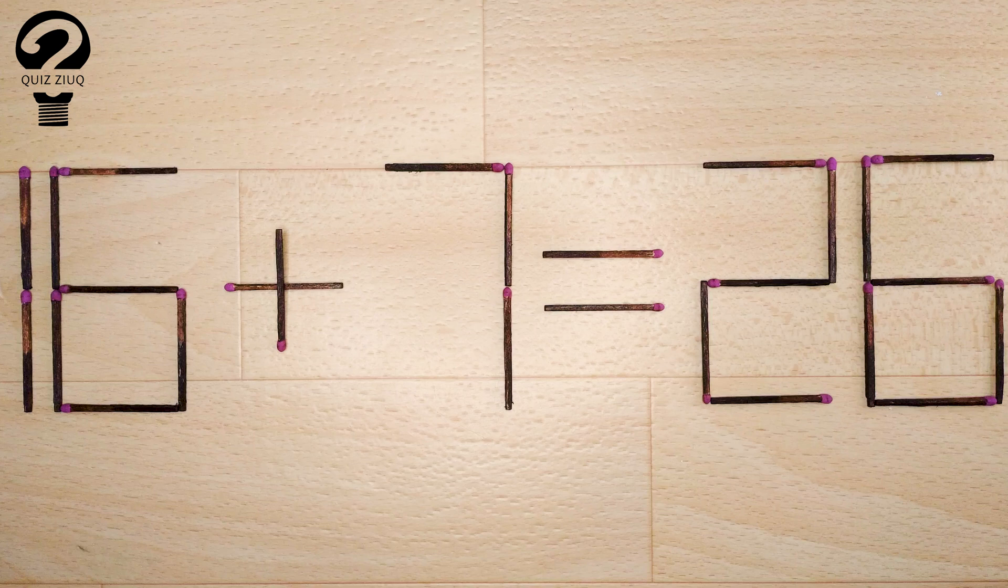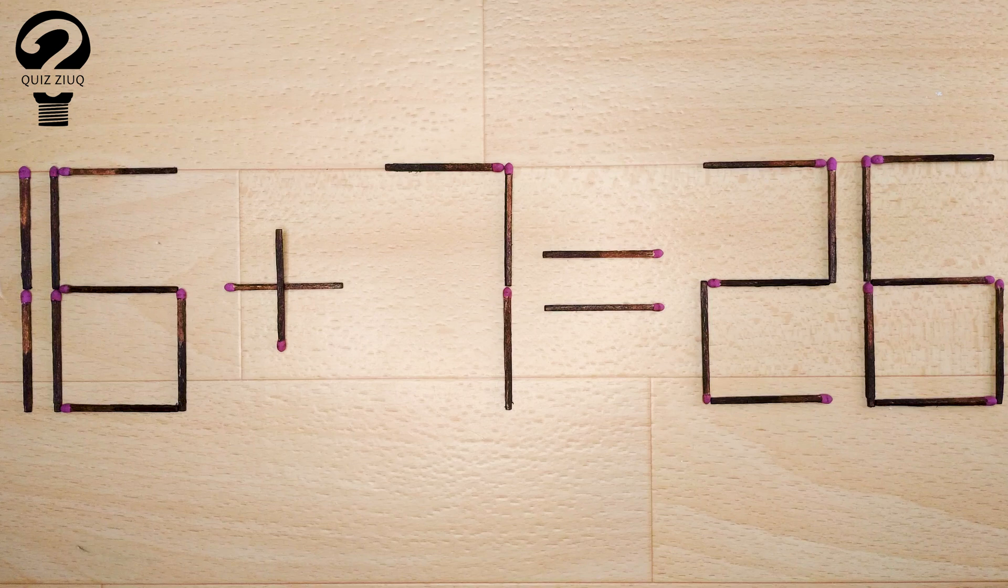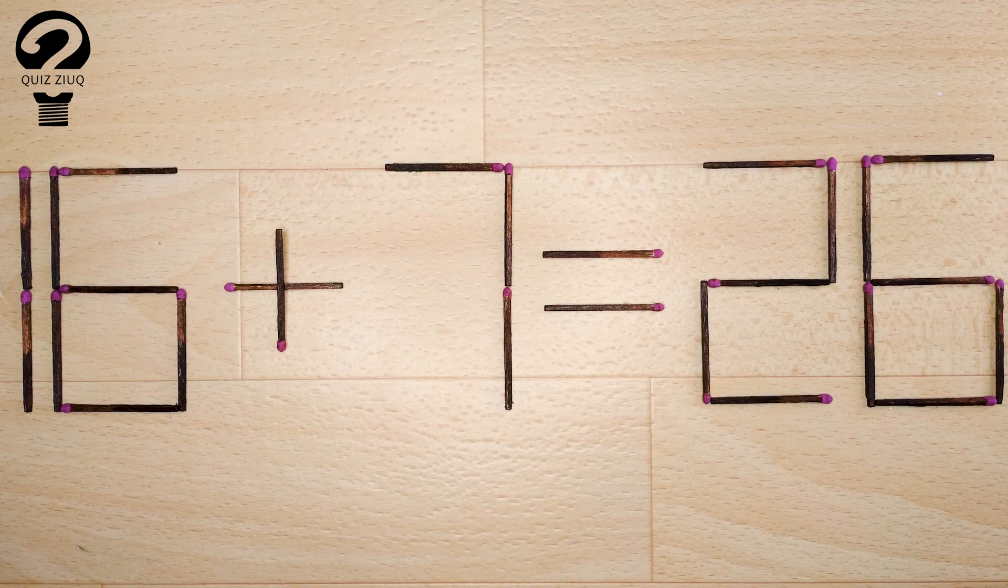Here's the next puzzle. We have the following equation: 16 plus 7 equals 26. Our equation is incorrect. We need to move one matchstick to make our equation correct.